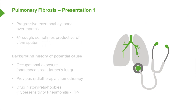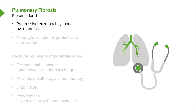How does pulmonary fibrosis present? Usually it presents with exertional dyspnea. The patient will say they've been getting more and more breathless over the past few weeks or months. Sometimes the patient may also have a cough, which is usually dry but can be productive of clear phlegm.